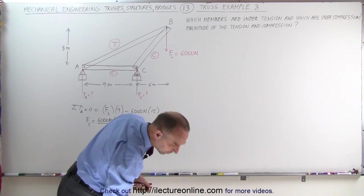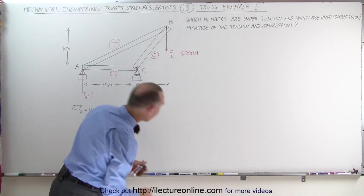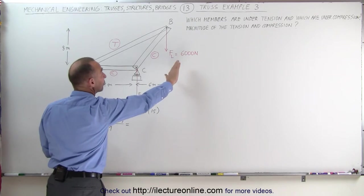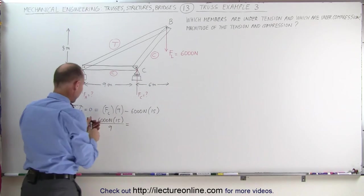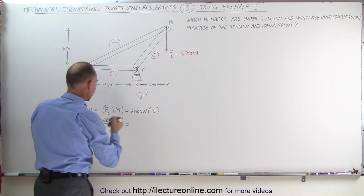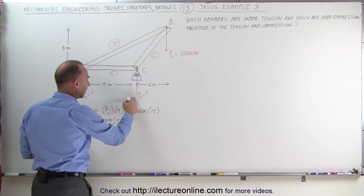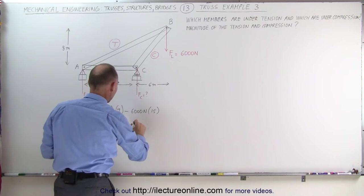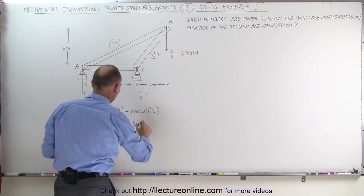This gives us 6,000 times 15 divided by 9, which equals 10,000 Newtons. That's a large value, and it makes sense because the 6,000 Newton force is farther out. That means the force supported at C is equal to 10,000 Newtons.